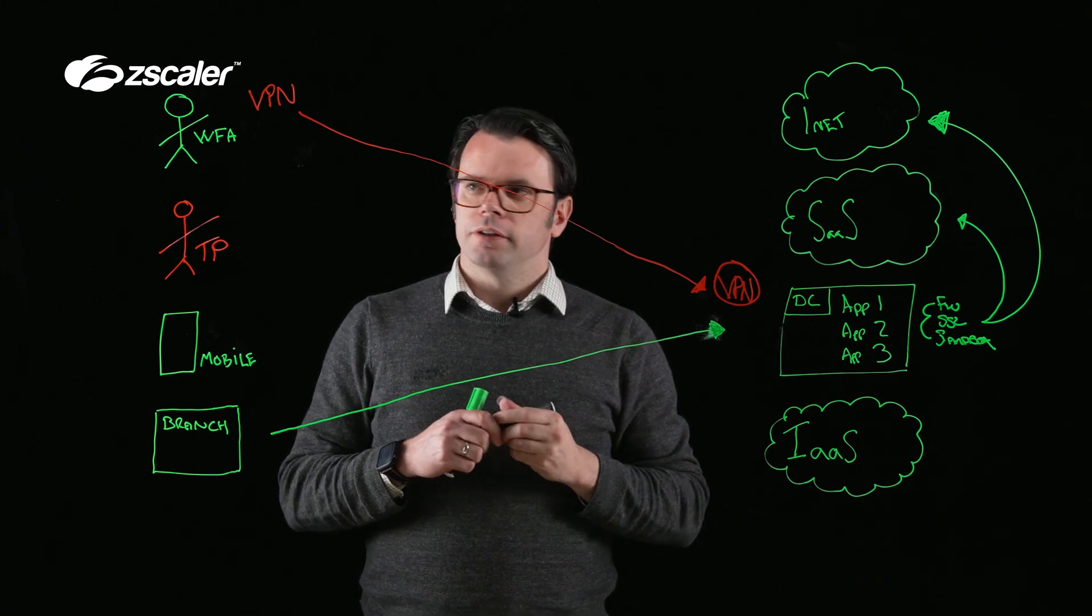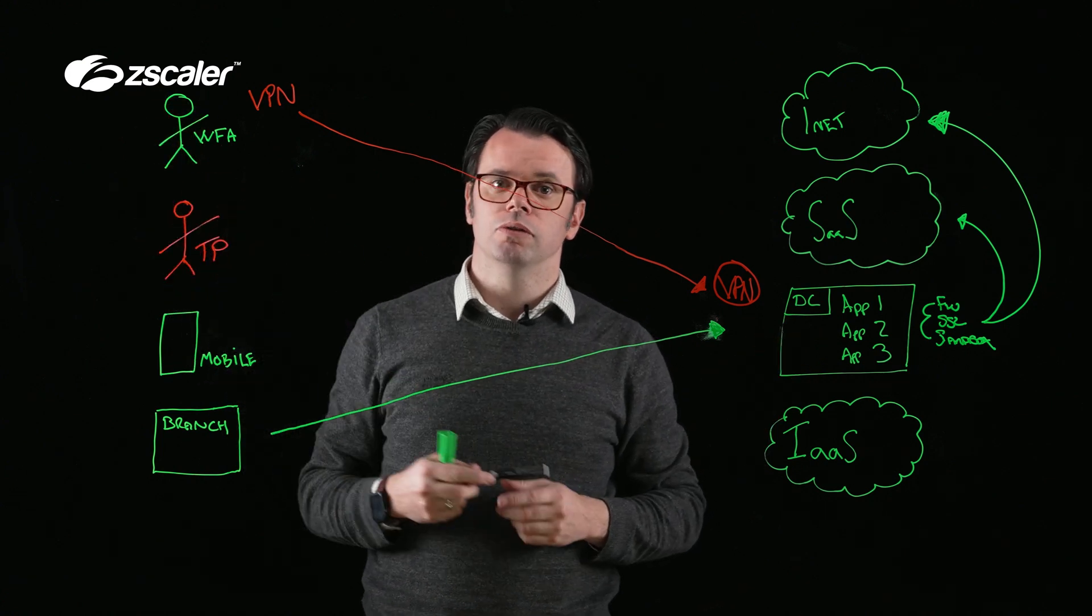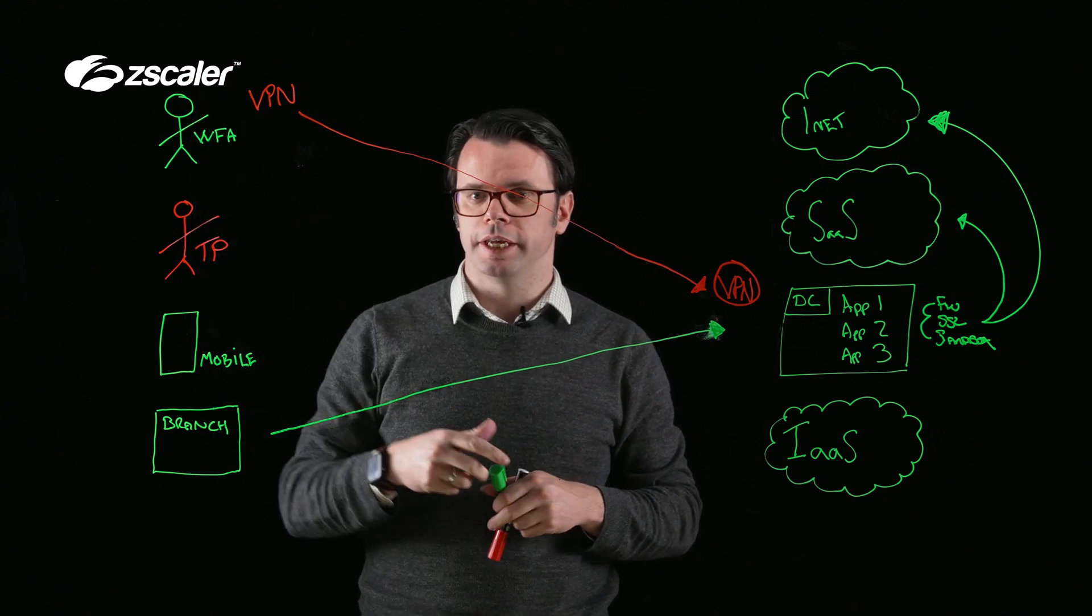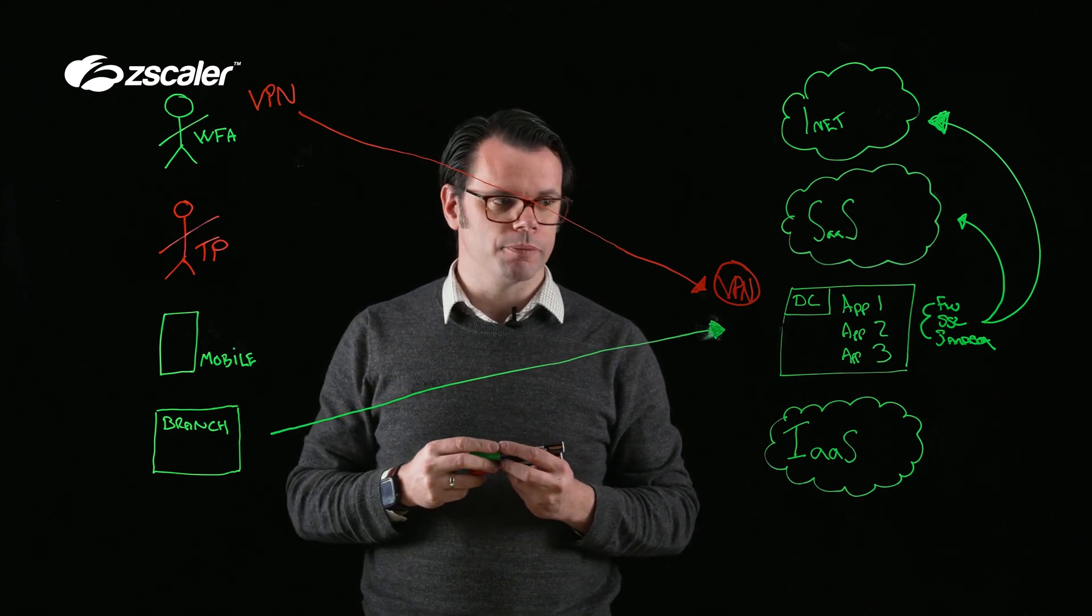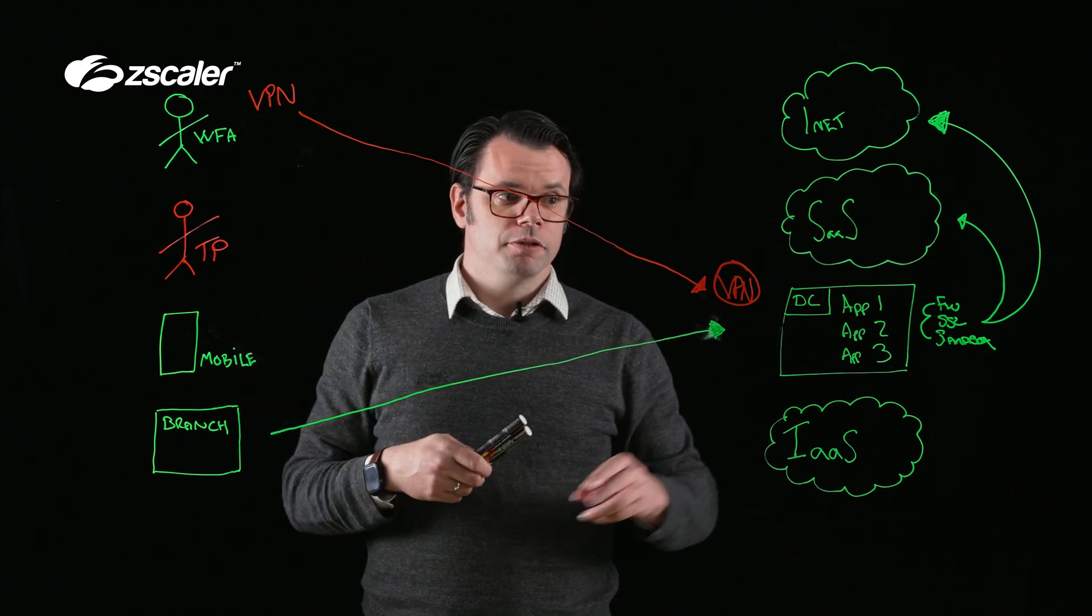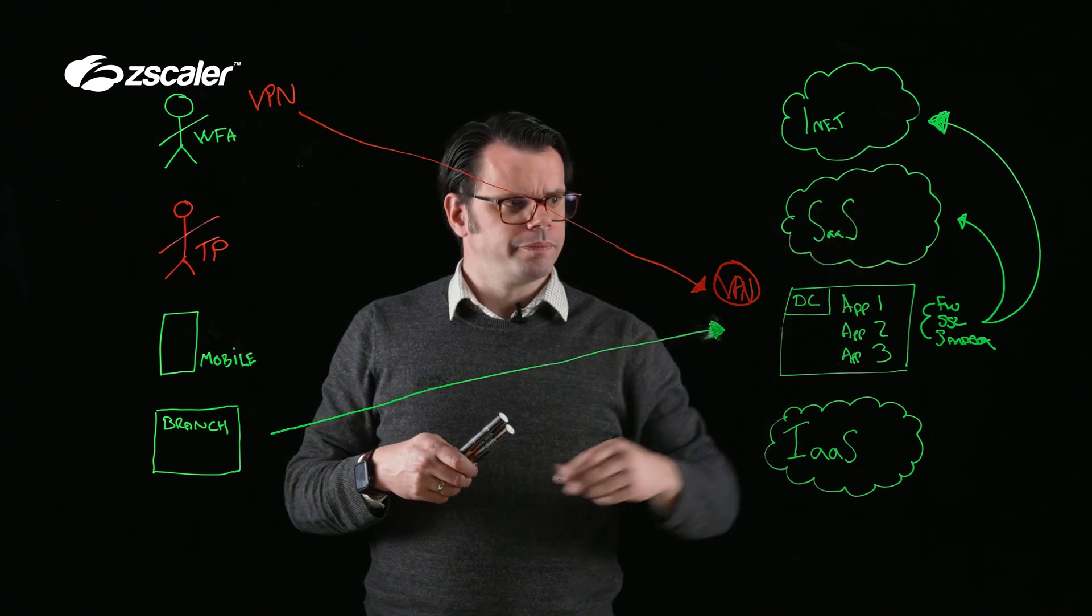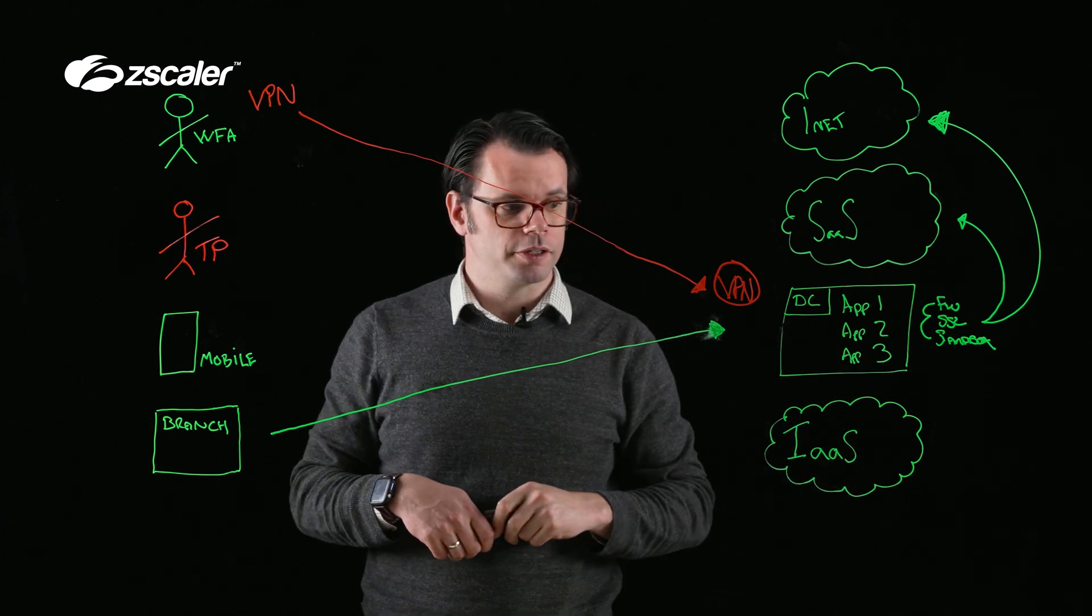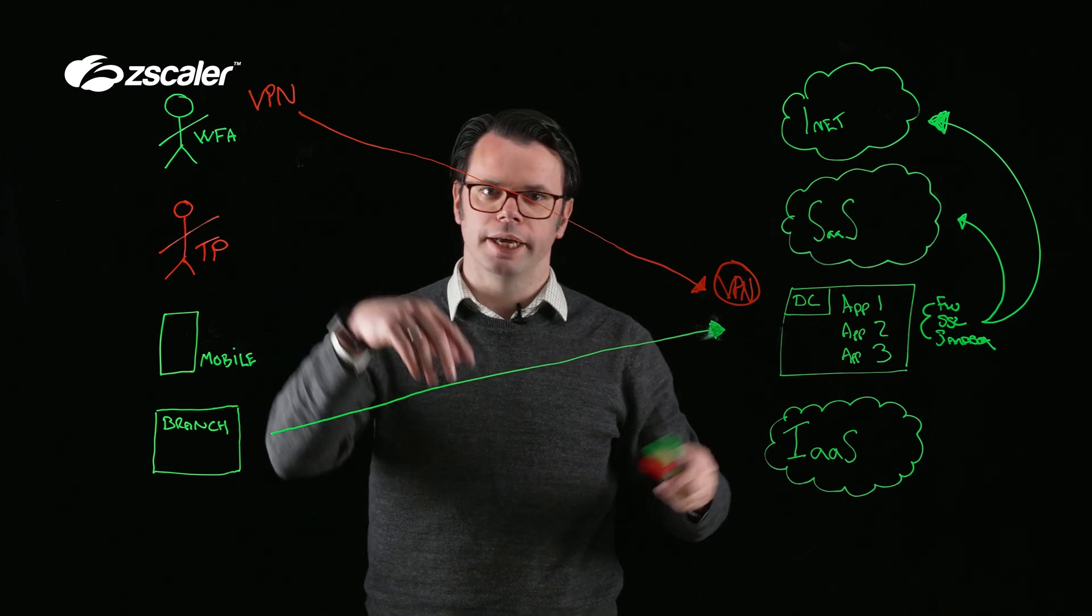The other issue we have is that we're effectively extending our network to include this device that's not within my perimeter. I have no idea what else is on that same subnet where they're working from home, in a hotel, or wherever else on public Wi-Fi around the world. So we've got the potential for lateral movement because we can jump from where that VPN lands to pretty much anywhere that the firewall allows. We're also still going to come back into a data center to go back up to our infrastructure as a service or over to the internet through these same controls, again all adding layers of latency.